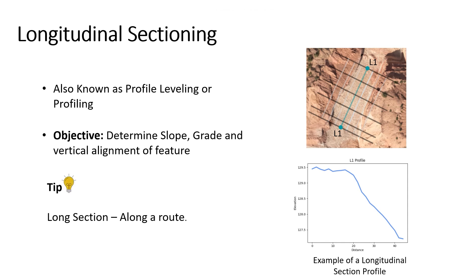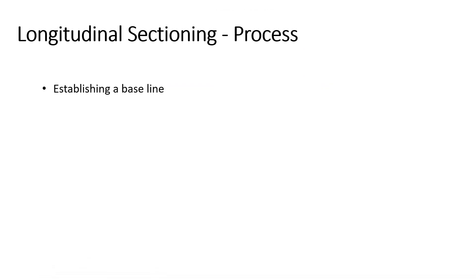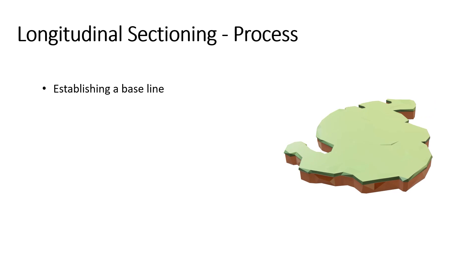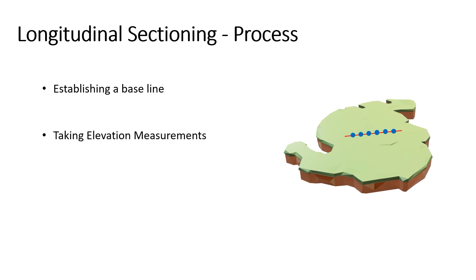The process of creating a longitudinal section typically involves the following steps. The first step is to establish a baseline — a straight line marked along the path of the feature being surveyed. This line serves as a reference for all subsequent measurements. The next step is taking elevation measurements: at regular intervals along the baseline, surveyors measure the elevation of the ground surface using an instrument like a leveling instrument.